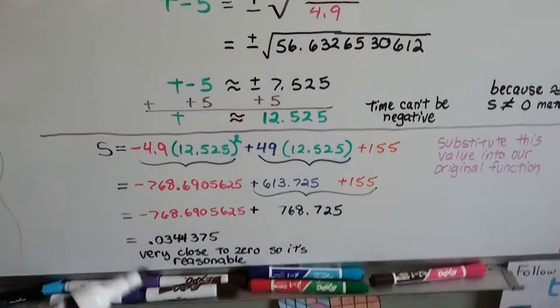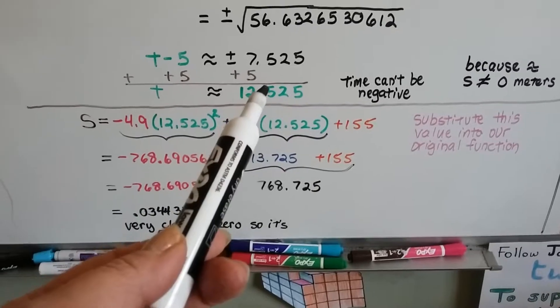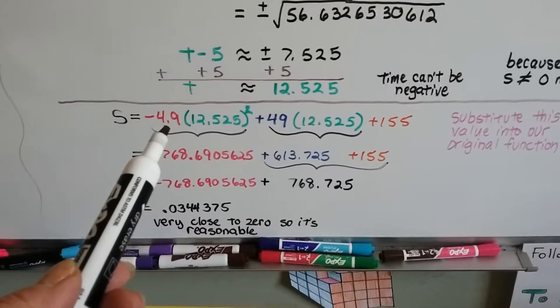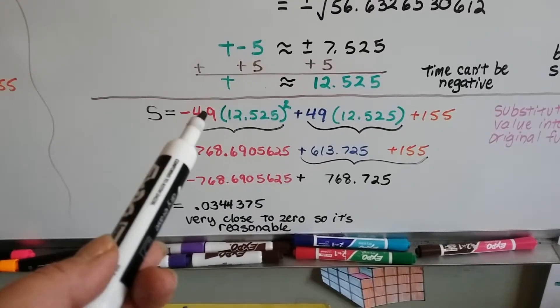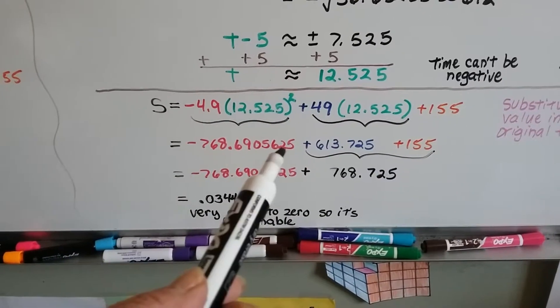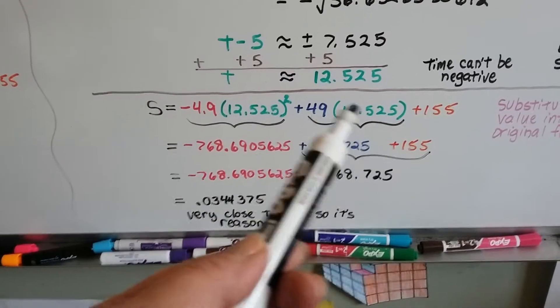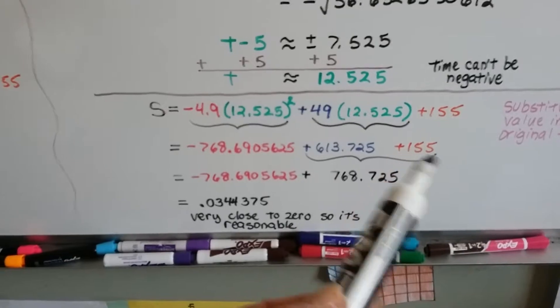I'll show you. We're going to substitute this value, this 12.525 into the original formula. We're going to square this and then multiply it by the negative 4.9. We're going to get this nice long decimal. We're going to multiply these two together and get that nice long decimal. Then we have to add the 155.